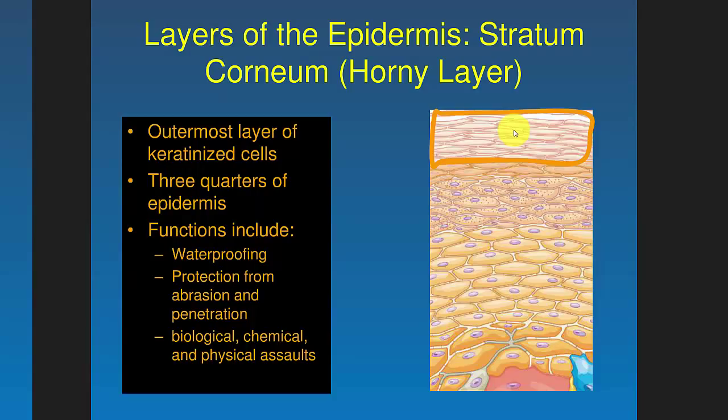The top layer is the stratum corneum, sometimes called the horny layer. It's the outermost layer of keratinized cells. Three-quarters of the cells in the epidermis are in the corneum. It's not the thickest layer, but it has the most cells because they've dried out and died. It's really good for waterproofing, and you can lose these cells from a scratch and still have a barrier — great protection against abrasion, penetration, and biological, chemical, and physical assaults.